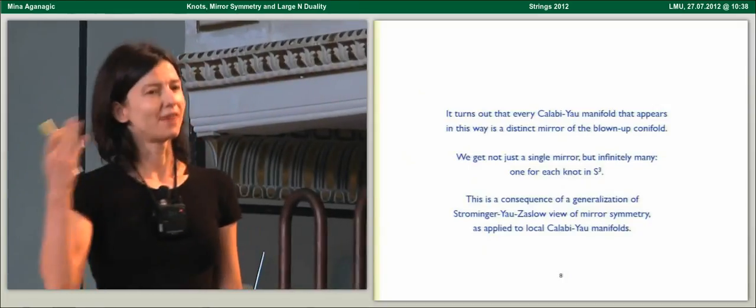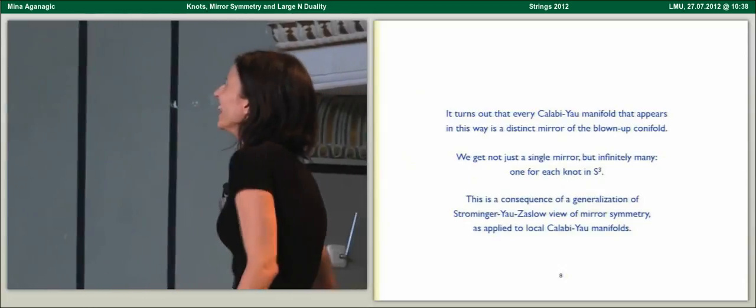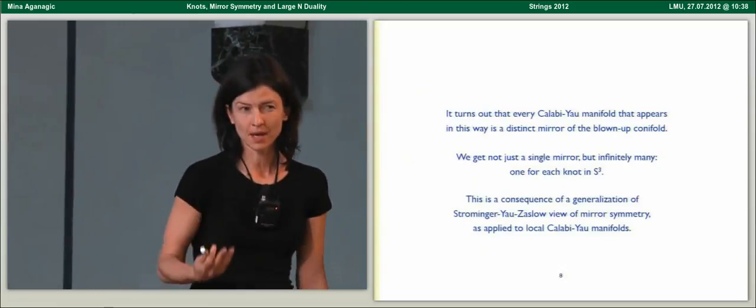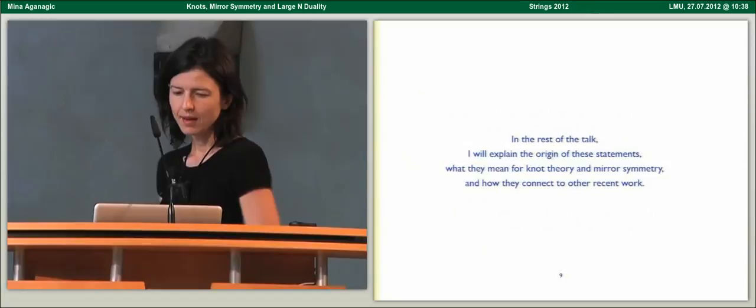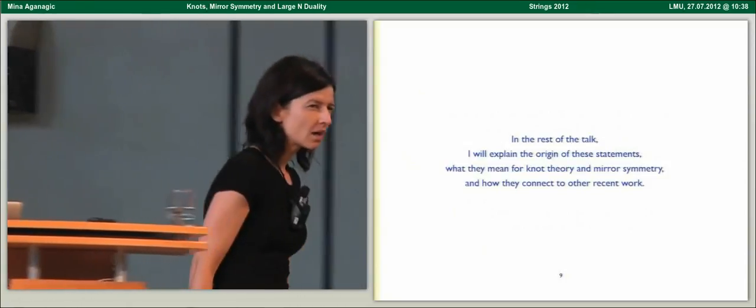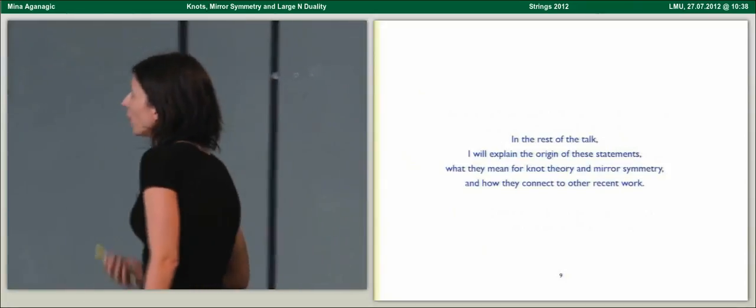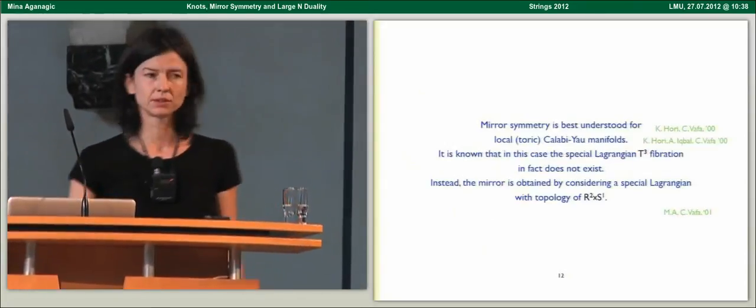This is a consequence of a generalization of Strominger-Yau-Zaslov's view of mirror symmetry applied to local Calabi-Yau manifolds. For the rest of this talk, I'll explain the origin of these statements, what they mean for knot theory and for mirror symmetry, and also how this connects to some other recent work.